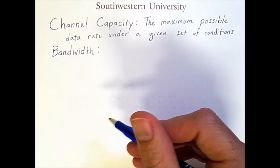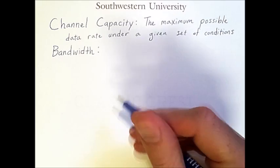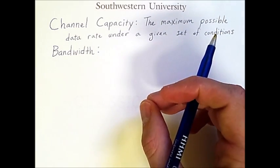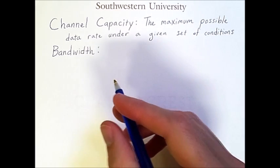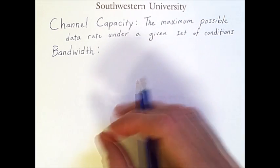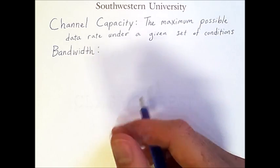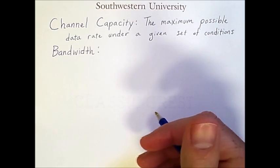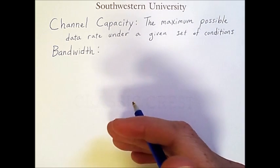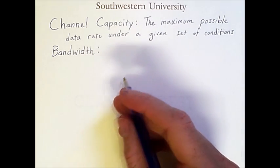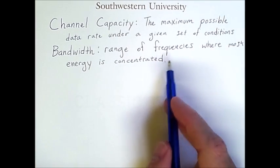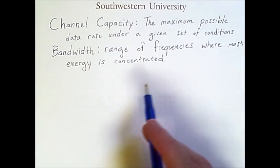However, in many cases, there is the bandwidth and then there is the effective bandwidth. And when we say bandwidth, we usually actually mean the effective bandwidth, which is the range of frequencies that contain the most energy and therefore can actually be used to detect signals. So when we say bandwidth, we mean the range of frequencies where the most energy is concentrated.